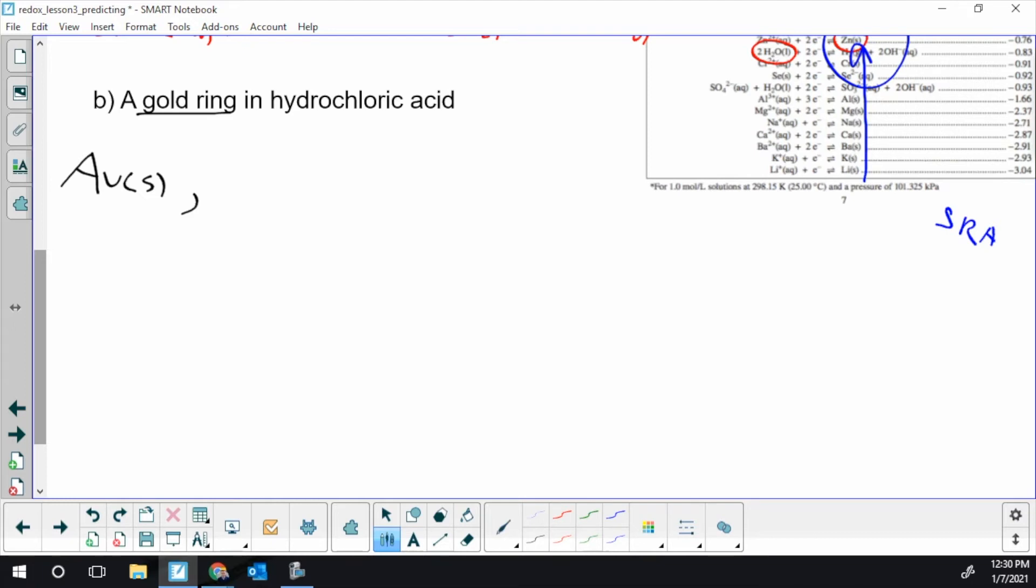So that's going to be a gold ring is going to be solid. All metals by themselves are solid. In hydrochloric acid. We just did that. That's a strong acid. So we use the H plus form and Cl minus is what's left over. And I need to include water.